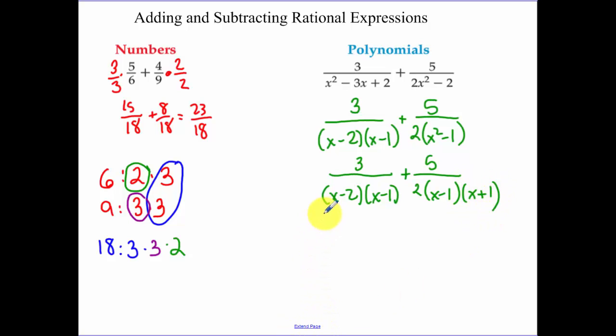So each one of these is considered a factor. So our least common factor would be 2. Both denominators have an x minus 1. This first denominator has an x minus 2 that the second denominator would need. And we have an x plus 1 that we would need. So that's how we get our least common denominator.